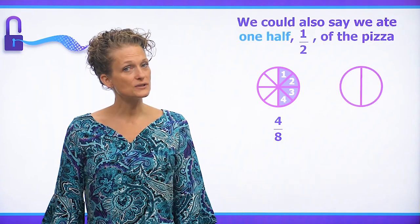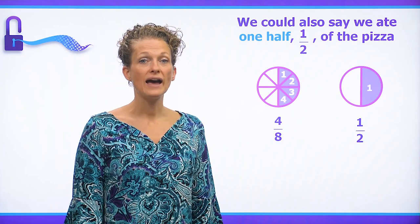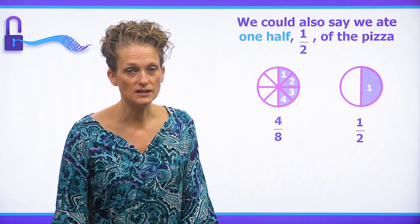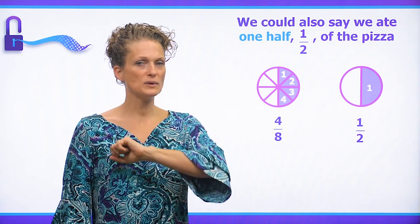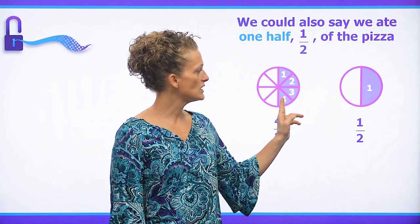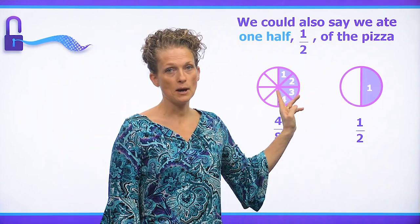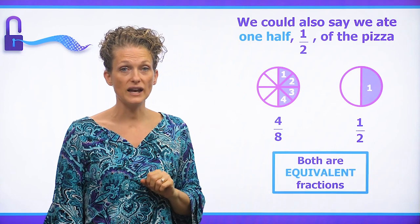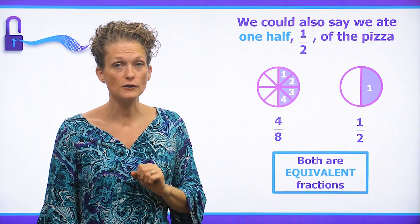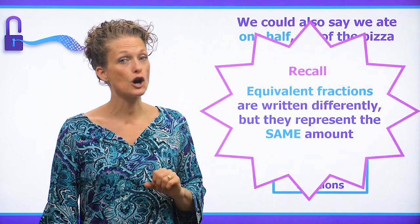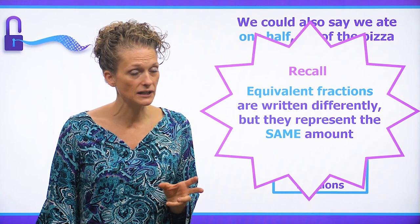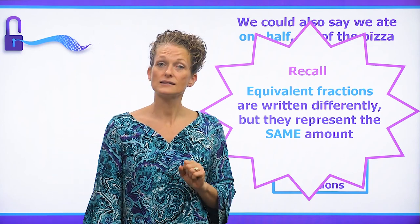We could also say that we ate one half of the pizza. We take the pizza, divide it into two equal pieces, eat one of those pieces, and you can see that we eat the same amount, which means that four eighths and one half are equivalent fractions. Remember, equivalent fractions are written differently, but they represent the same amount.